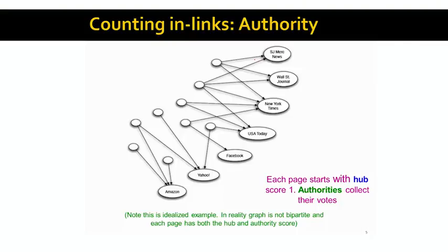Let's think of the web graph as a bipartite graph where good hubs point to good authorities, using the newspaper example. We have a set of newspapers on the right and a set of hubs on the left. Initially, all hub scores are set to one. Each newspaper page collects its in-votes: San Jose Mercury News gets two votes, Wall Street Journal gets two votes, New York Times gets four votes, and so on.